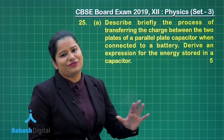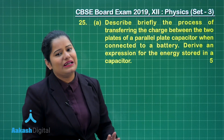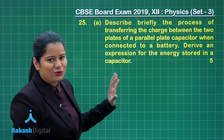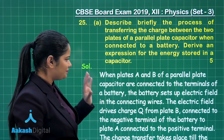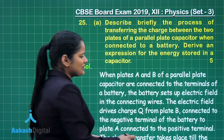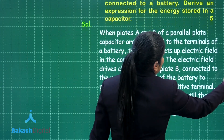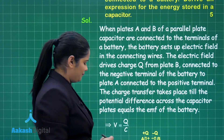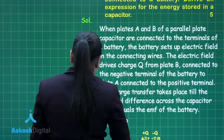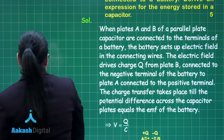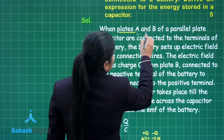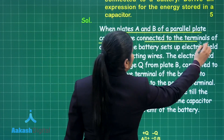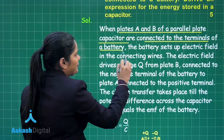Both parts of this question are of 2 and a half marks each. Let's have a look at the solution for this part of the question. First, we will be explaining the process of charging a capacitor. When plate A and B of a parallel plate capacitor are connected to the terminal of a battery, what happens?